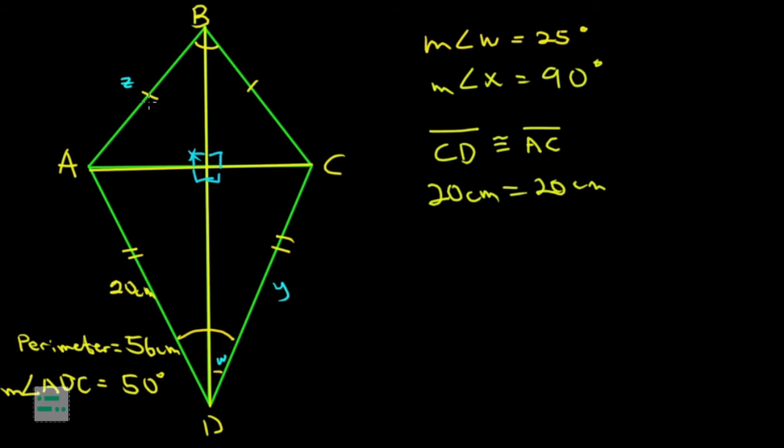Huli natin tingnan itong length ng side AB, yun yung Z. Ang alam lang natin, congruent siya dun sa adjacent side niya which is BC. Problema, hindi rin natin alam ang sukat nito. Ano kayang maaari nating pakinabangan? Binigay sa atin yung perimeter which is 56 cm. Yung perimeter ay yung makukuha natin kung i-add natin yung length ng lahat ng sides. So AB plus BC plus CD plus AD measures 56 cm.